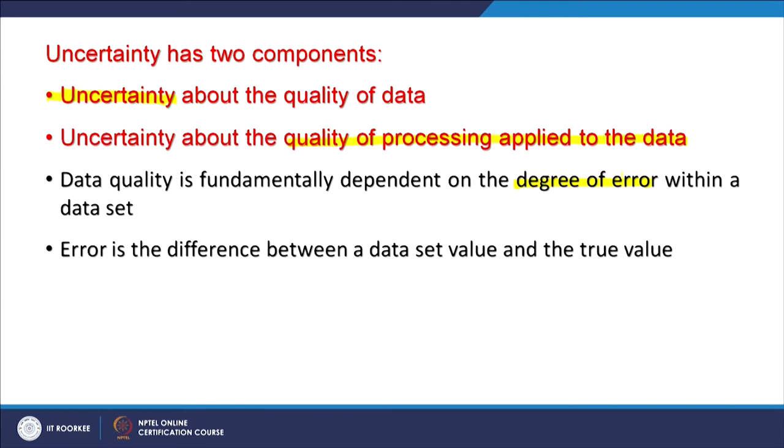Data quality is fundamentally dependent on the degree of error within a dataset. If errors are minimal, the DEM provides a good representation of the terrain. If the degree of error is very high, reliability drops and uncertainty becomes large. Error is basically the difference between the dataset value and the true value. The problem is that in many cases, we do not know the true value at each location because the DEM is a continuous surface — for each cell, the true value is unknown.